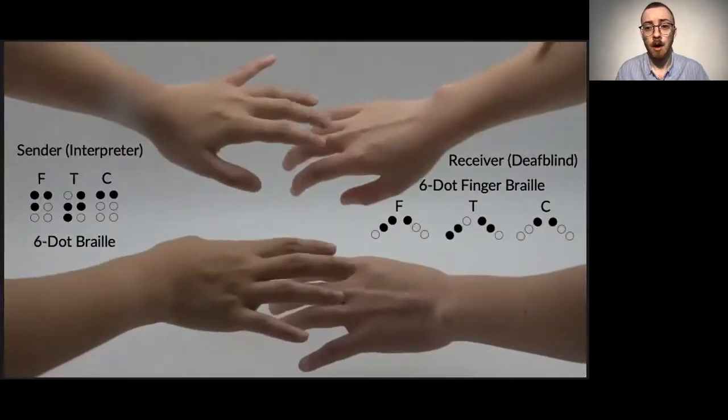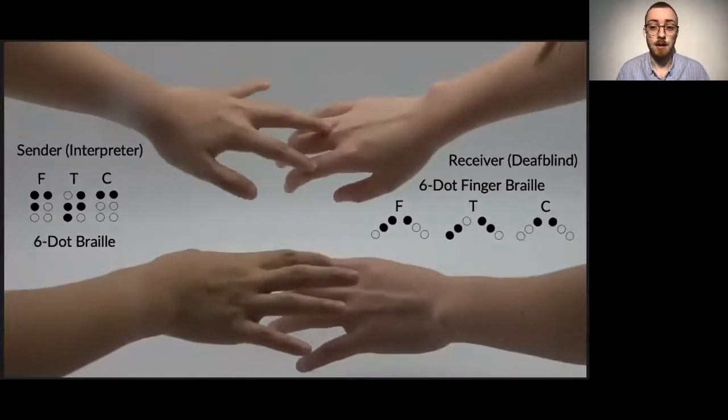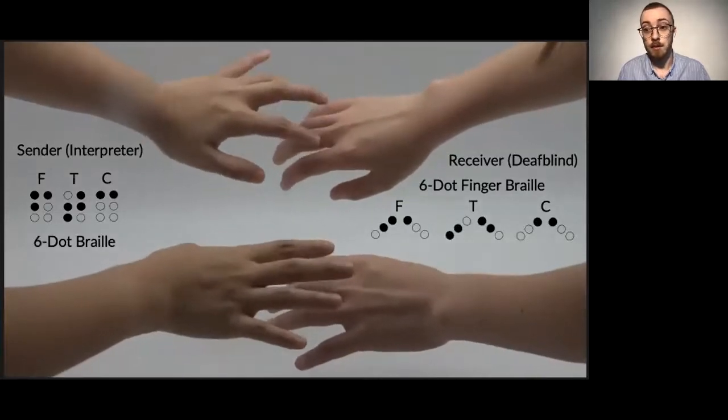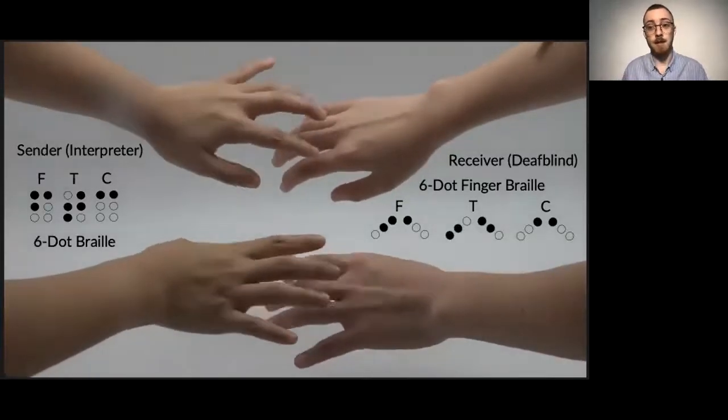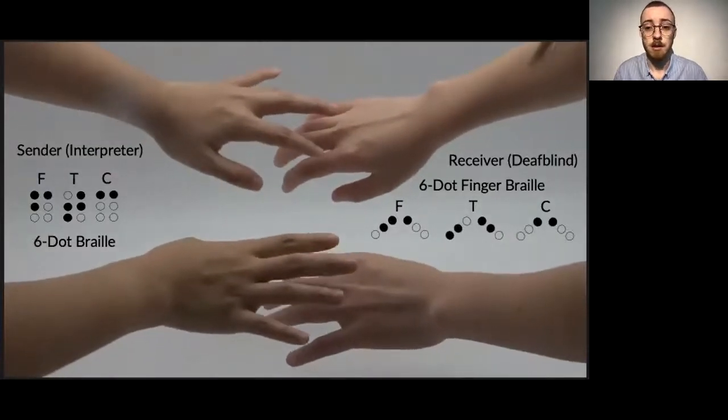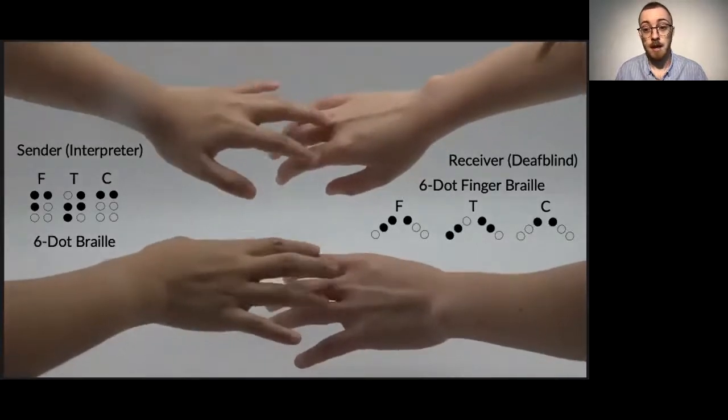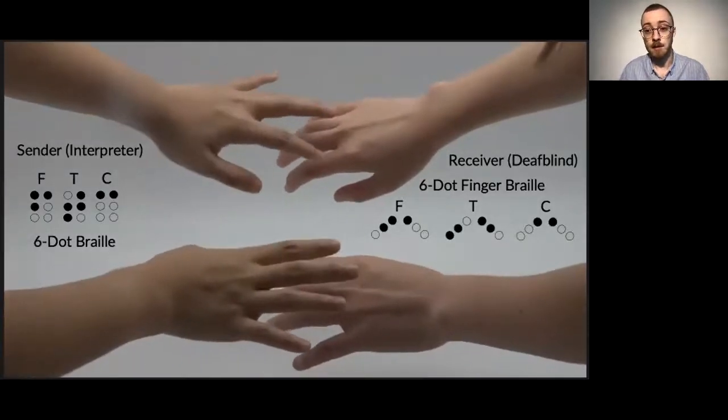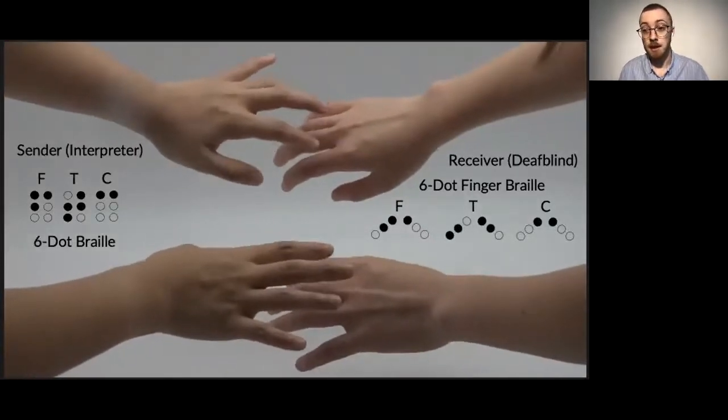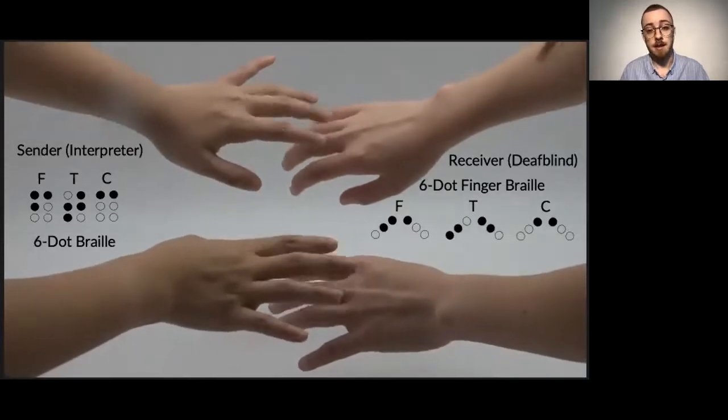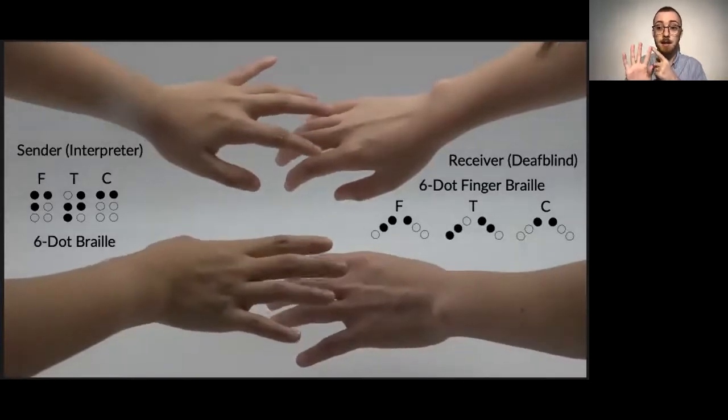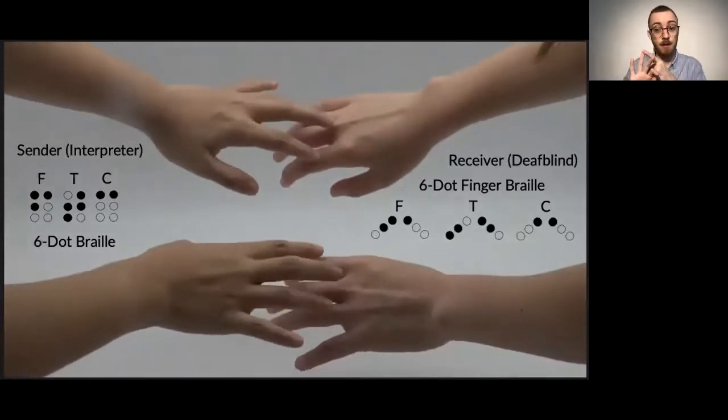What forms of communication can deafblind individuals utilize? For the deafblind, the concept of sensory substitution can be used to present information from different modalities in a form where it can be received through their tactile sensory channels. As is being demonstrated on the screen at the moment, a commonly utilized form of tactile feedback is finger braille. This was originally created in Japan, and it's a type of tactile communication where the sender dots braille code on the fingers of the receiver using the thumb, the index, the middle finger, and also the ring finger on each hand.